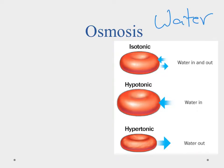Osmosis is simply the diffusion of water. Water is essential for life. Osmosis works the same way — it goes from high concentration to low concentration. There are three basic conditions: the first is isotonic, where the concentration inside the cell equals the concentration outside the cell, and water is free to move in and out.